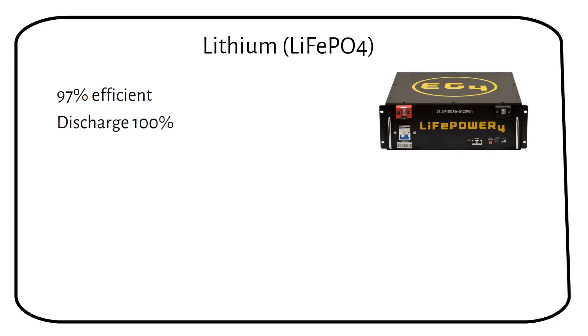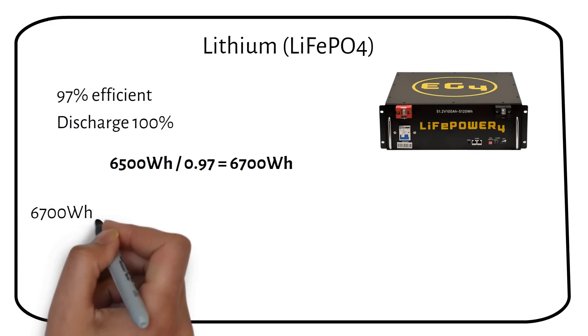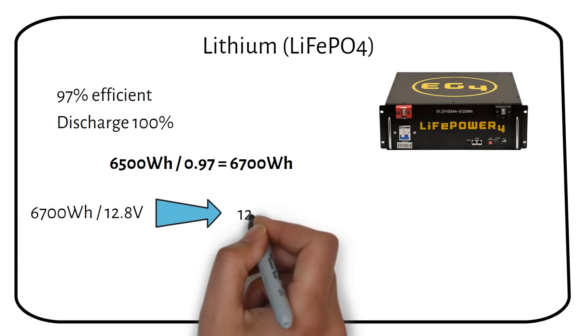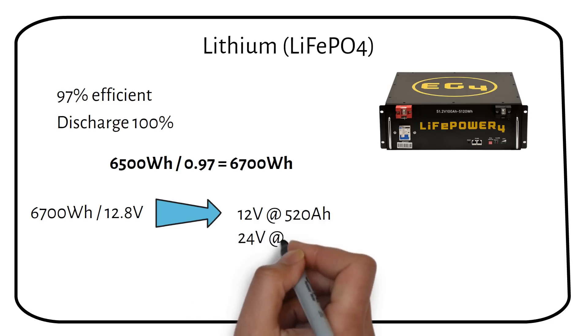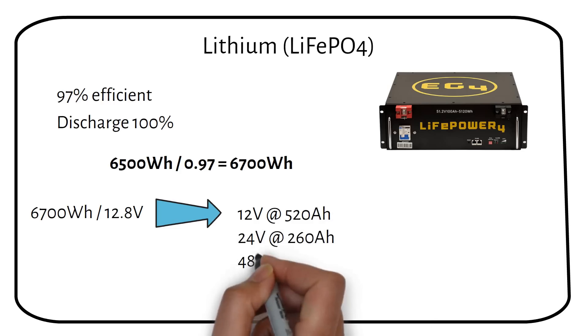The calculation for lithium goes as follows. For a 12 volt battery, we would need 520 amp hours. For a 24 volt battery, we need 260 amp hours. And for a 48 volt battery, we would need 130 amp hours.